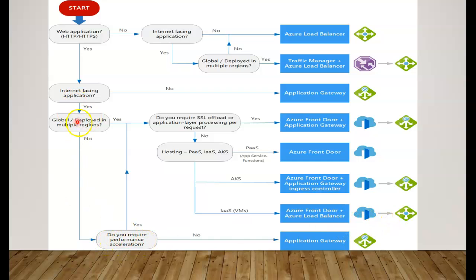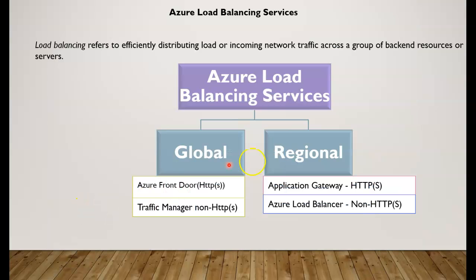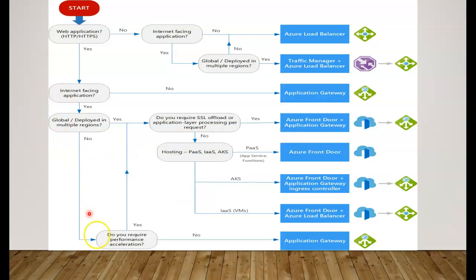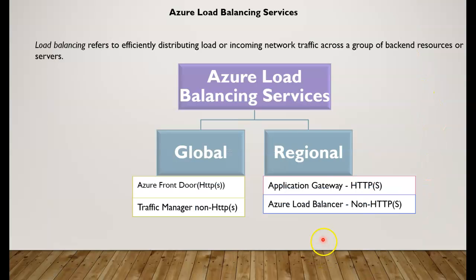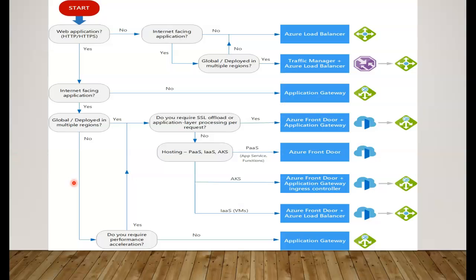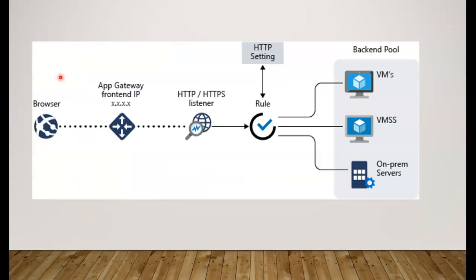If you are looking at non-global, that means the regional option, and if you do not require performance acceleration, a simple Application Gateway would help. Most places use Application Gateway because it knows much about how to control the application as a service running on layer 7 capabilities.